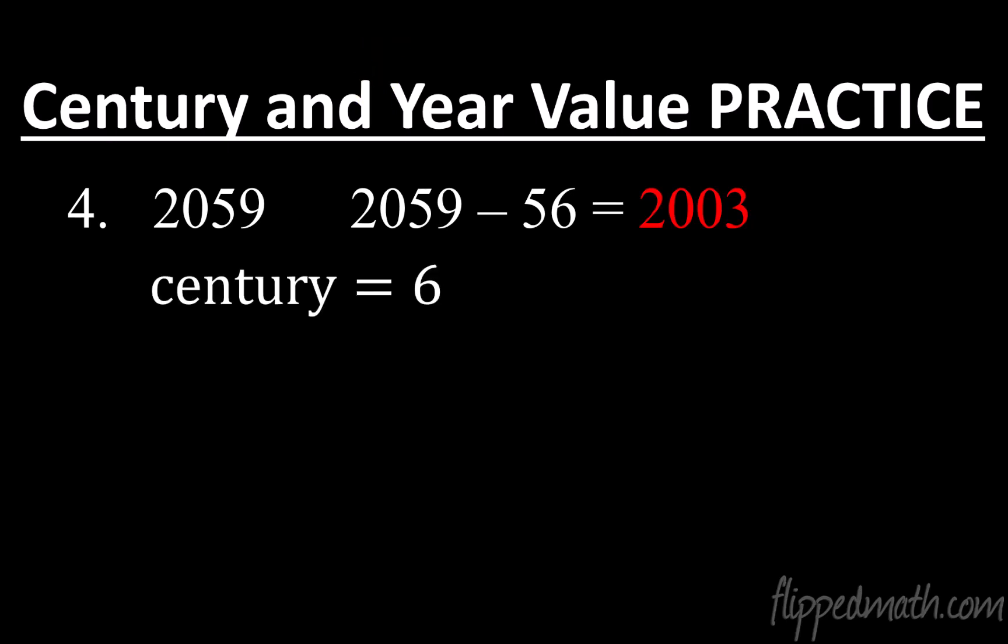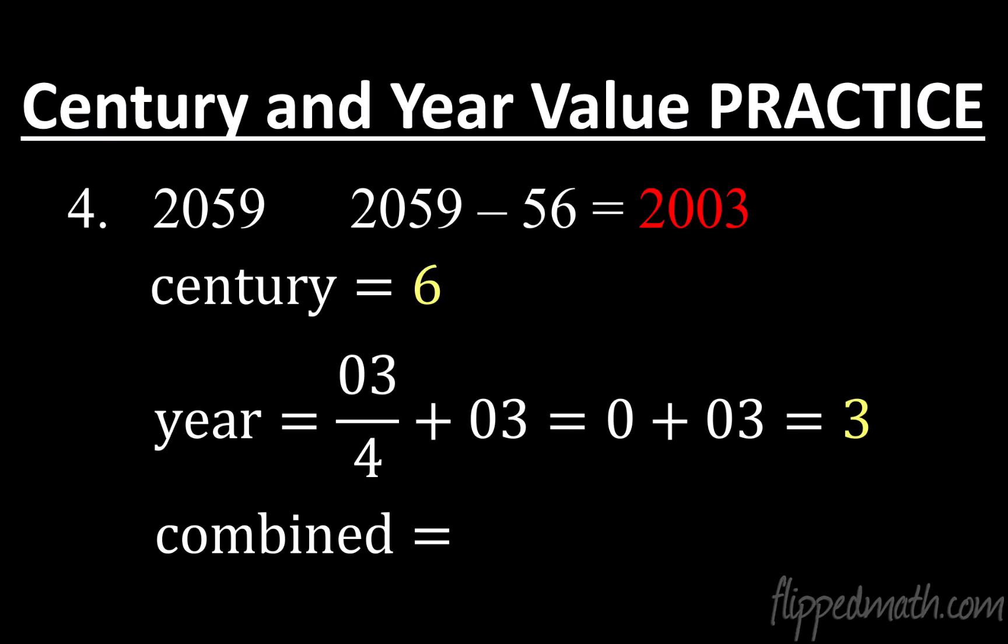All right. So what's the century value? We have 6 for our century value. And then the year value is 03 over 4 plus 03, the last two digits. Well, that's just 0 plus 3. And so therefore, we have 3 as our year value. So century and year value combined gives us 9. And if you look back up on your paper, on your notes, you can see that we came up with a 2 for our other answer. But if you're trying to do it in your head, working with 2059 is really challenging. Working with 2003, much more accessible to you. A lot easier to work with.